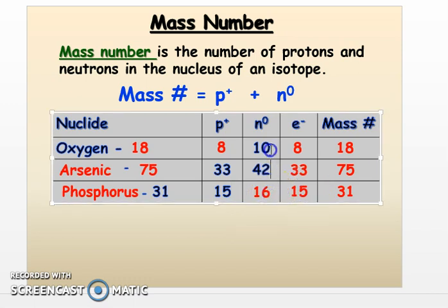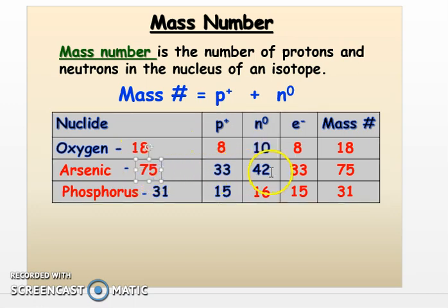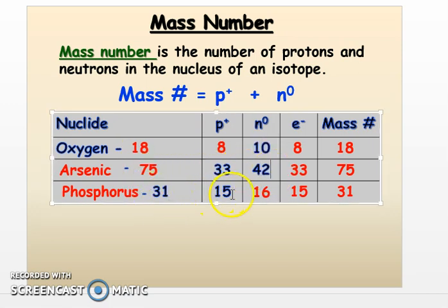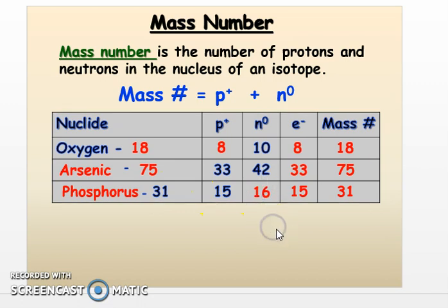Now the neutron number can change because it depends on the mass. So 18 minus 8 is 10. 75 minus 33 is 42. 31 minus 15 is 16. So again, we're going to review this concept of isotopes on Tuesday.